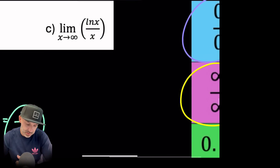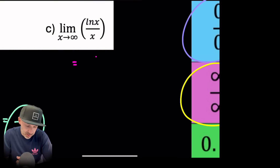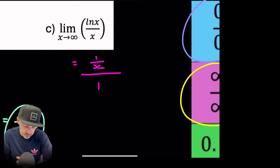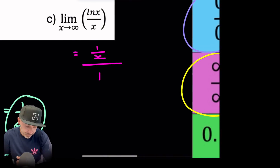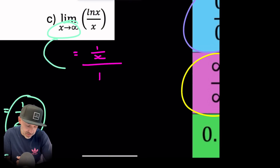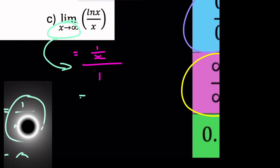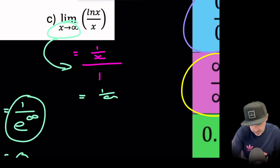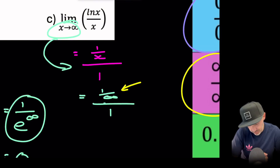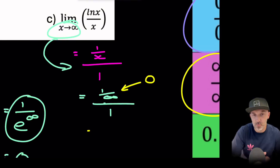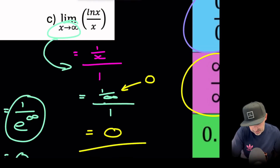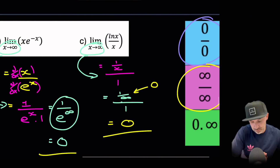Part c: find the limit as x tends to infinity of ln(x)/x. Applying L'Hôpital's rule, we differentiate the numerator ln(x) to get 1/x, and the denominator x differentiates to 1. This gives (1/x)/1. Substituting infinity gives (1/∞)/1, and 1/∞ tends to 0, so 0/1 = 0. The limit tends to 0.